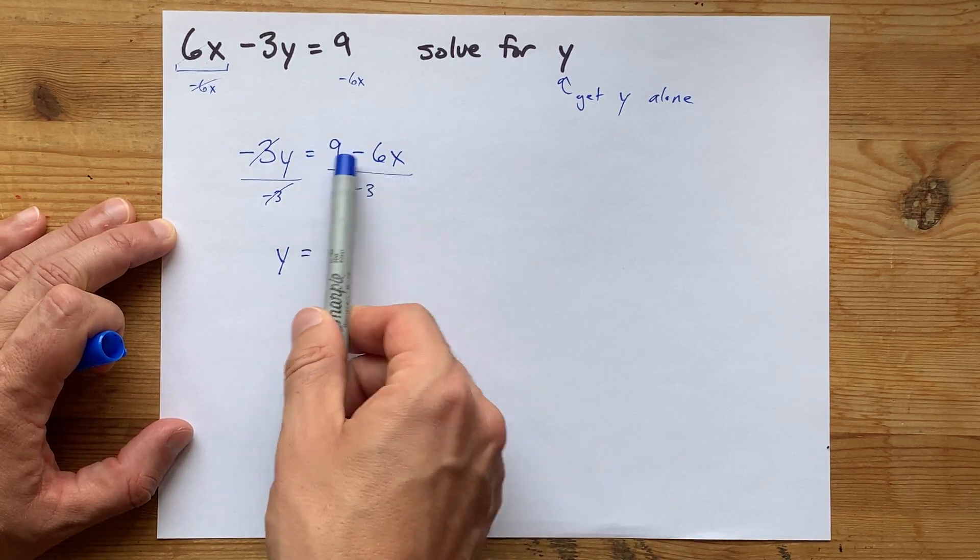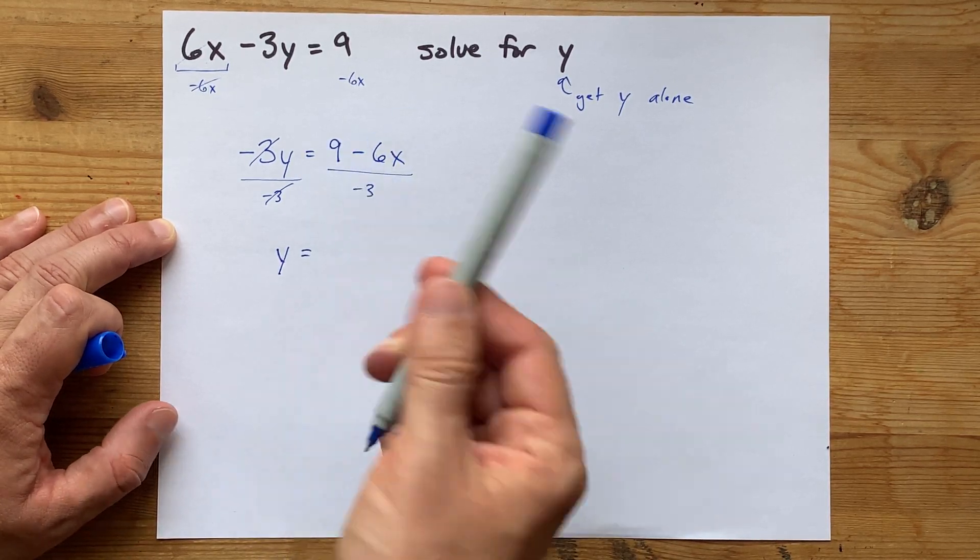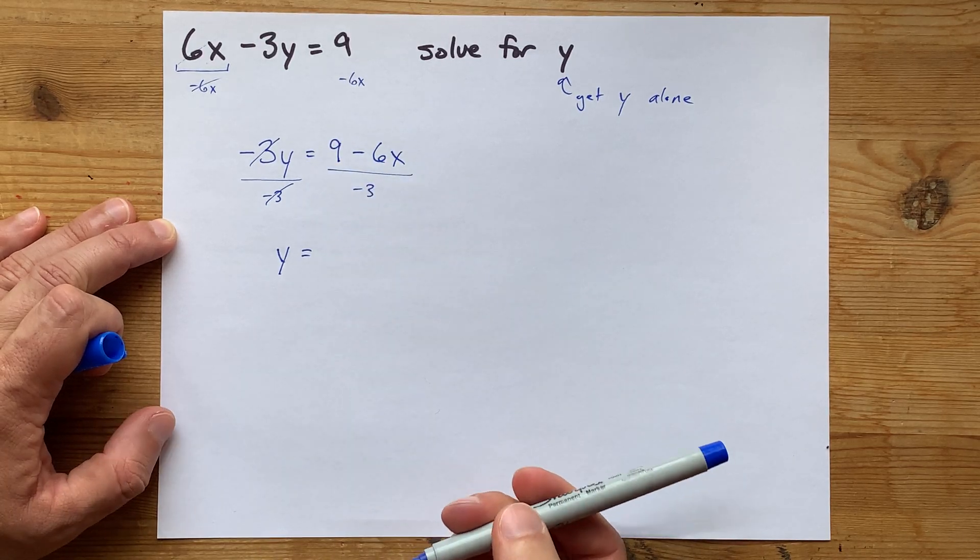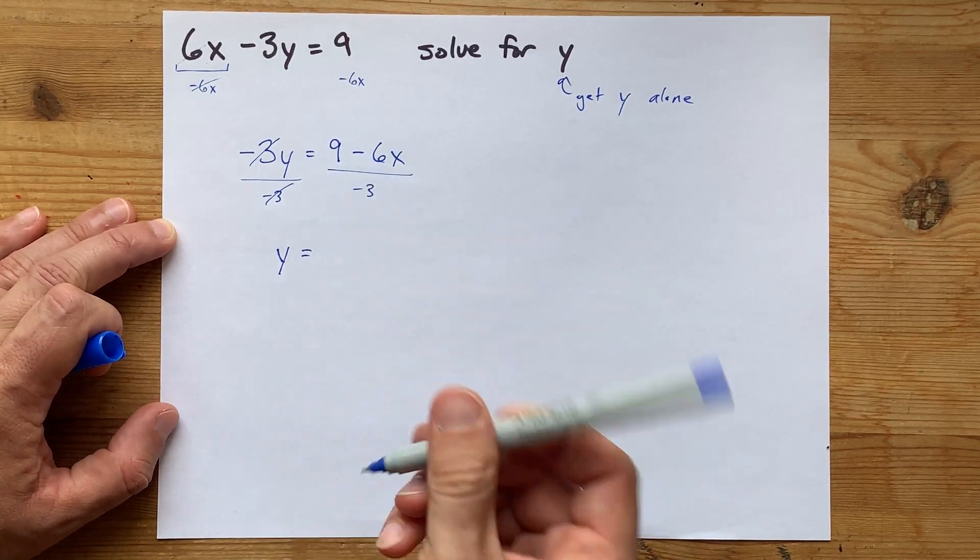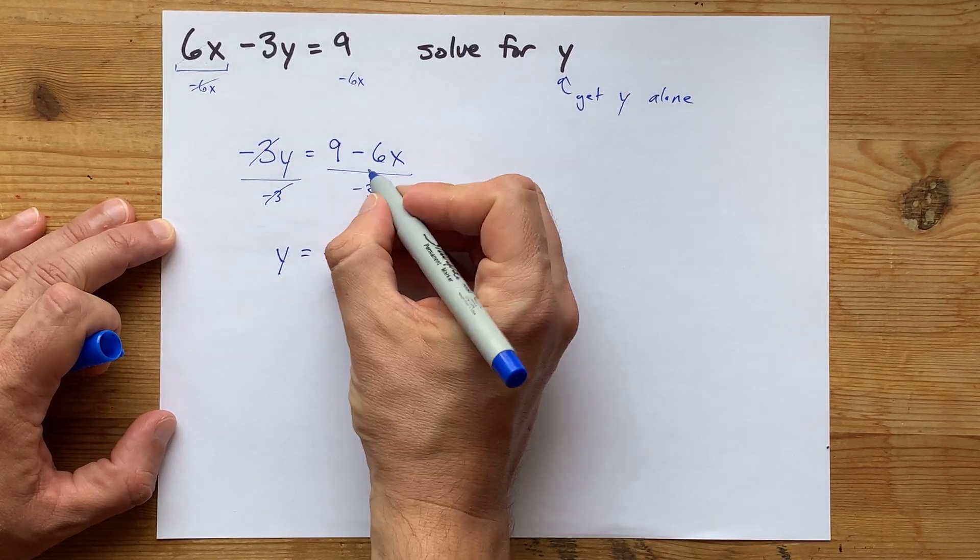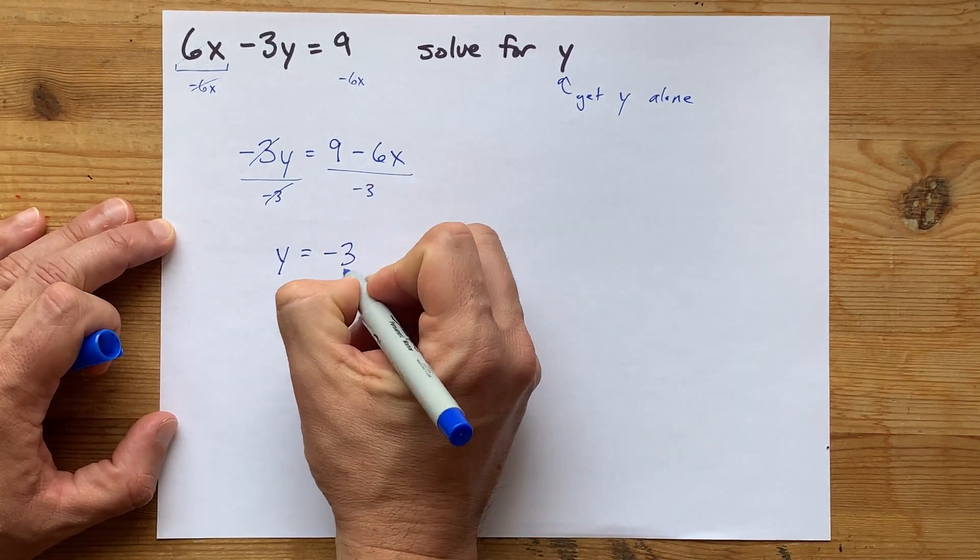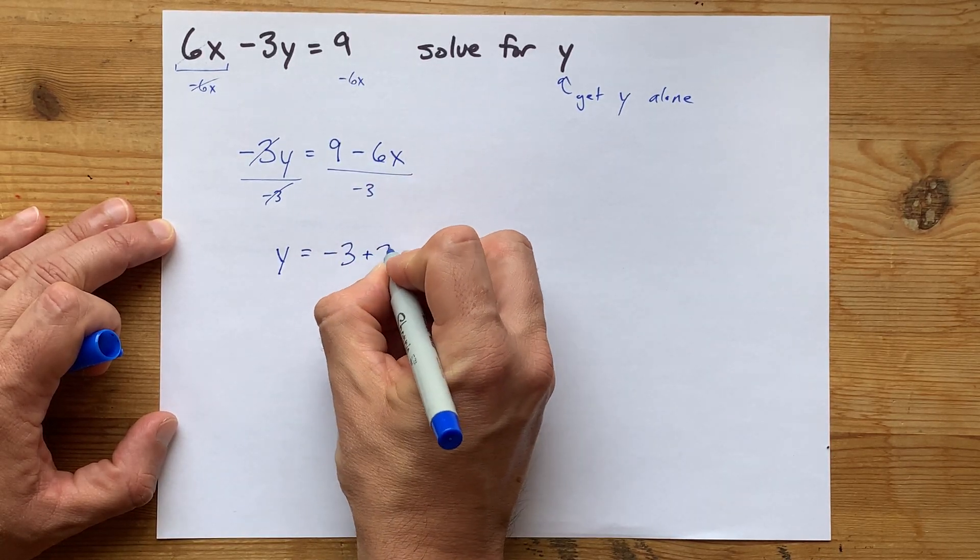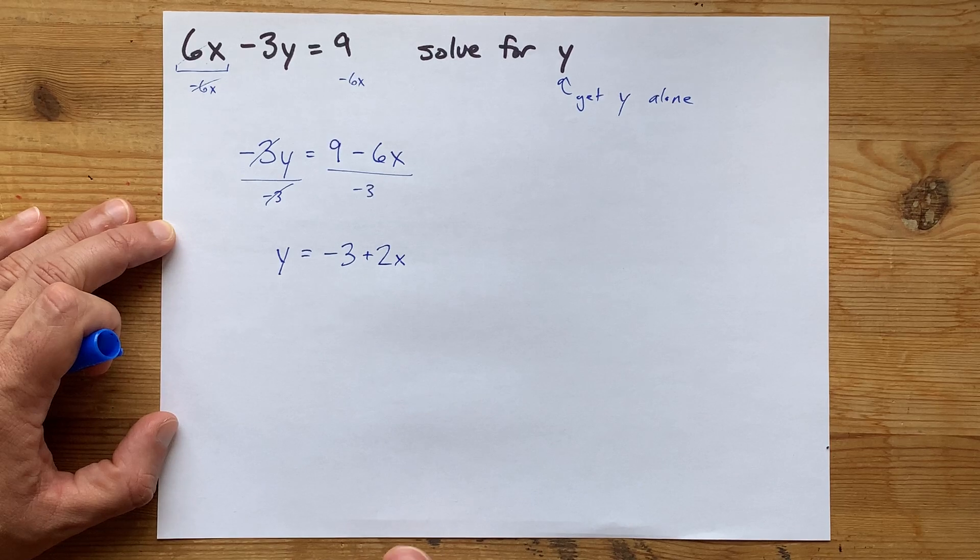Now, because these two are separated by addition or subtraction, I can actually just divide them each separately by negative 3. 9 divided by negative 3 is actually just another negative 3. And negative 6x divided by negative 3, the negatives cancel. 6 divided by 3 is 2. So I end up with 2x.